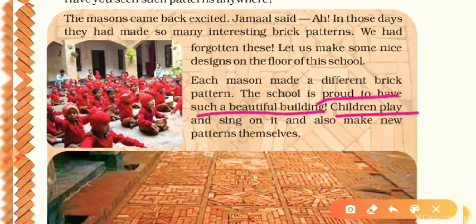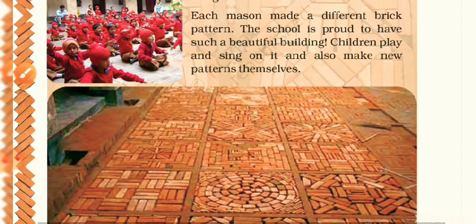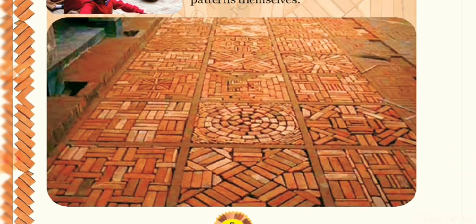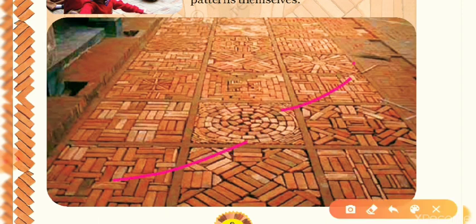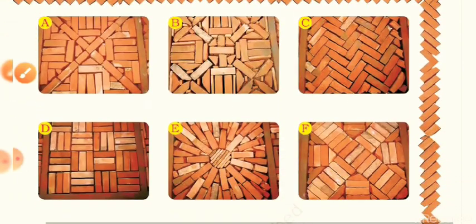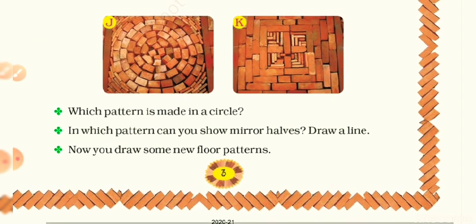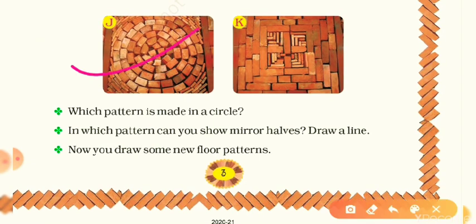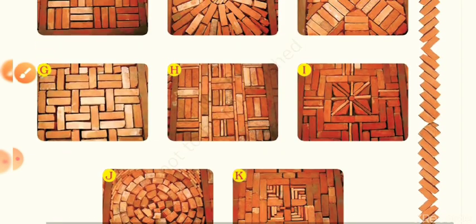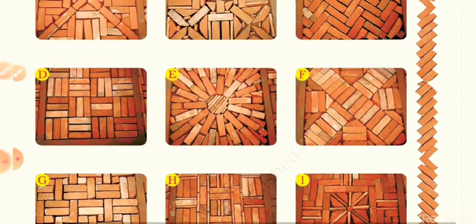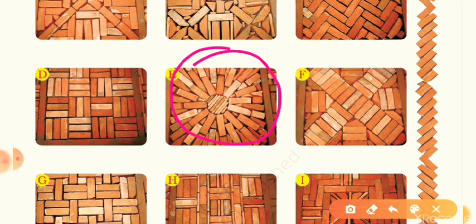Finally, the school is ready and the children are also trying to make some patterns themselves — such beautiful patterns. The patterns are classified as pictures A, B, C, D, E, and so on. Which pattern is made in a circle? Yes, J is made in a circle. Is there any other? G is not, H is not — yes, E is also in a circle. So there are only two patterns made in a circle.